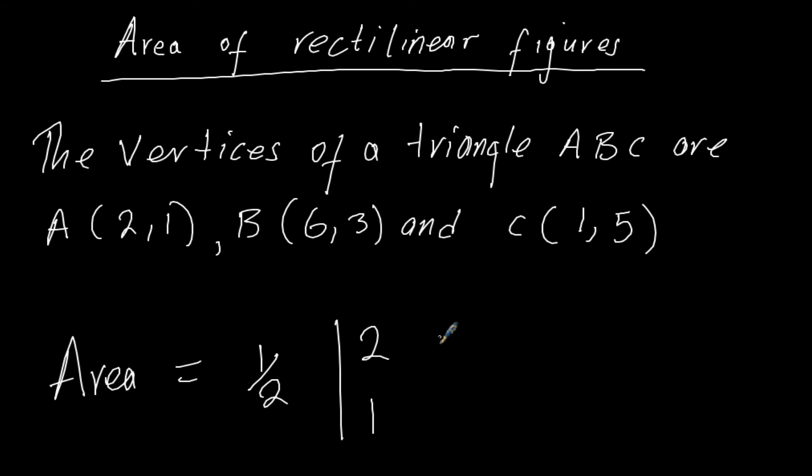So we shall be having 2, 1, and then coordinates of B, 6, 3, C is 1, 5. And then repeat what we started with, which is 2, 1.